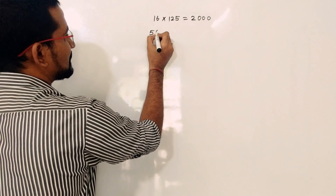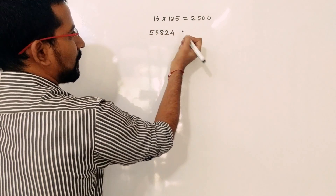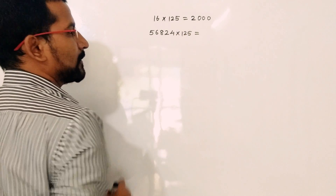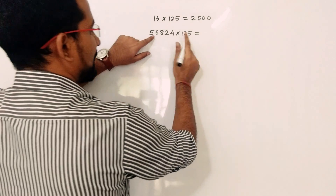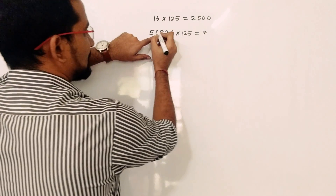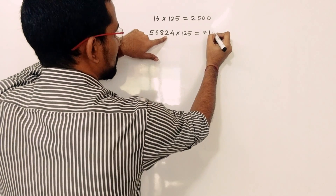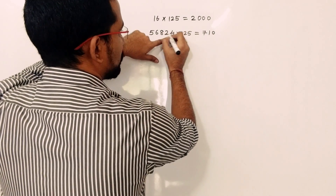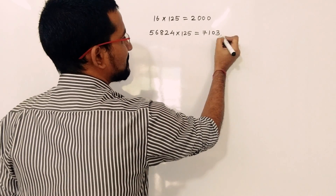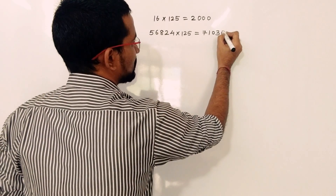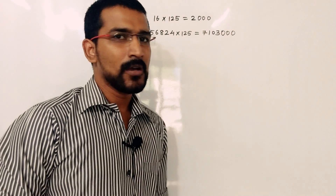Now take another example: 56,824 multiplied by 125. Divide this number by 8, working digit by digit with carries. The result is 7,103. Multiply by 1,000 — add three zeros — giving 7,103,000.